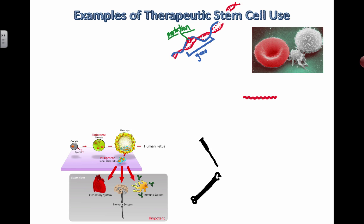We're going to take a look at two examples of therapeutic stem cell uses. The basic concept is the same: something's wrong with the body because of a genetic mutation or some other issue where you have non-functioning cells that aren't able to do their job. What we try to do is basically put in healthy cells. Stem cells are undifferentiated — they have the ability to turn into any kind of cell.